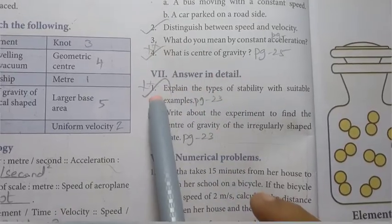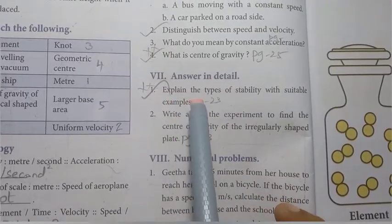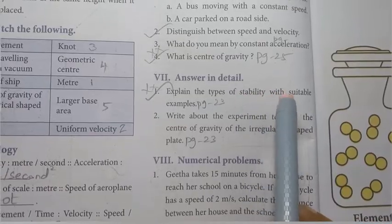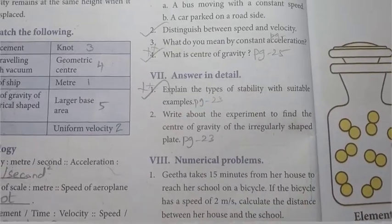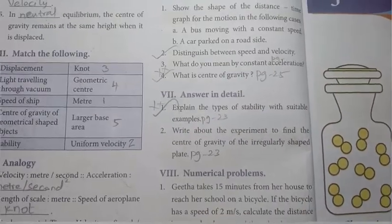Answer in detail: first one, explain the types of stability with suitable examples. This is very important. Next, Atomic Structure, page number 42.